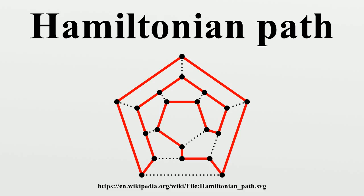Hamiltonian paths and cycles are named after William Rowan Hamilton, who invented the Eccasian game, now also known as Hamilton's puzzle, which involves finding a Hamiltonian cycle in the edge graph of the dodecahedron. Hamilton solved this problem using the Eccasian calculus, an algebraic structure based on roots of unity with many similarities to the quaternions. This solution does not generalize to arbitrary graphs.